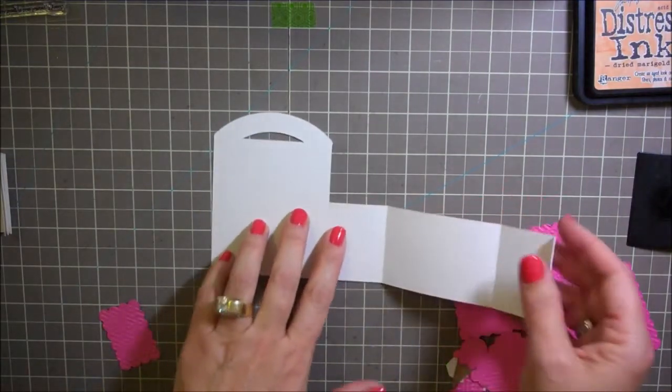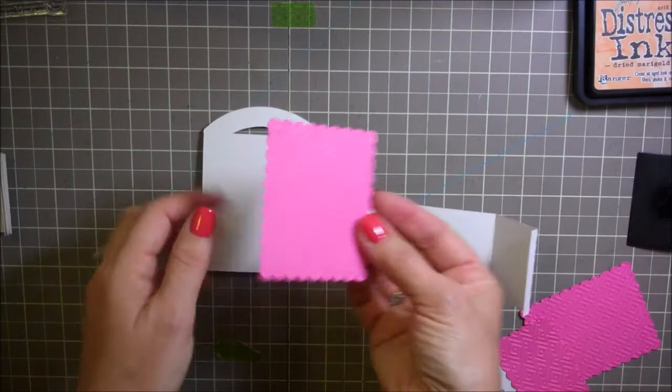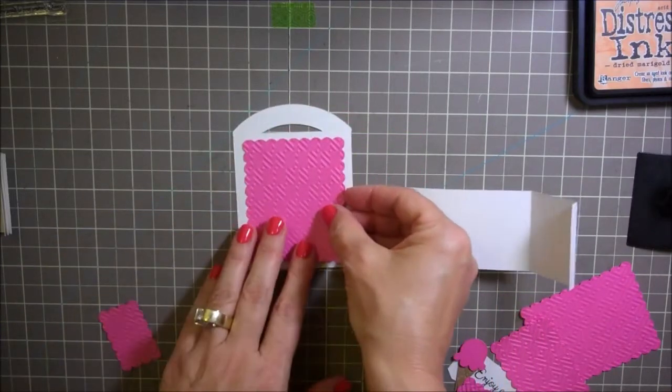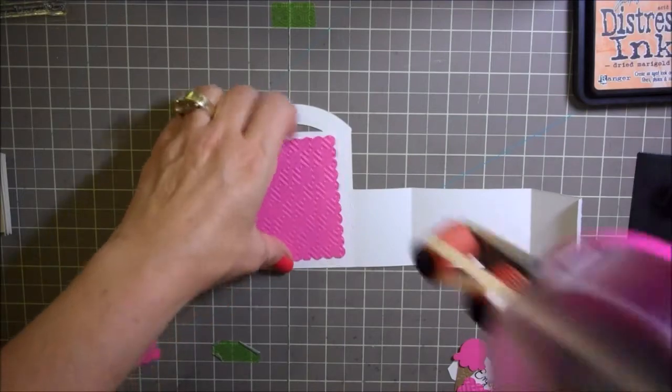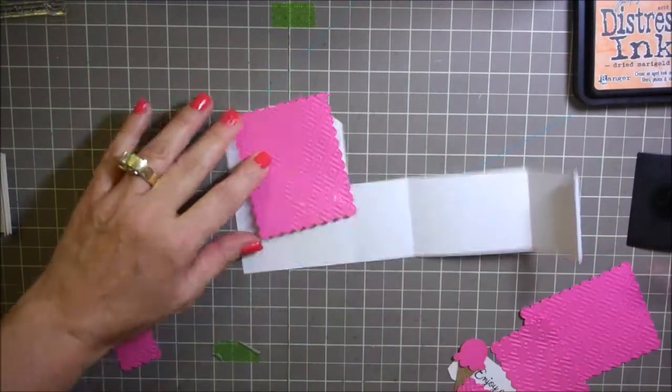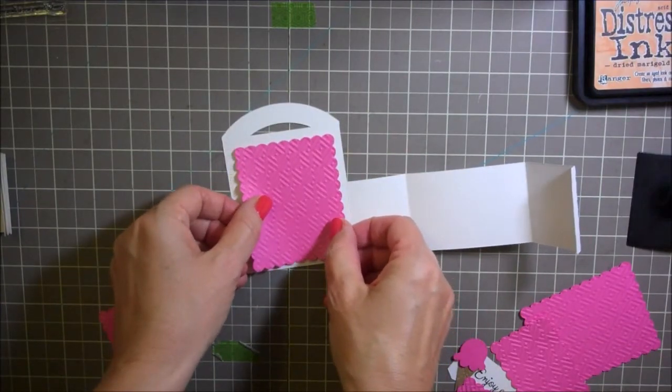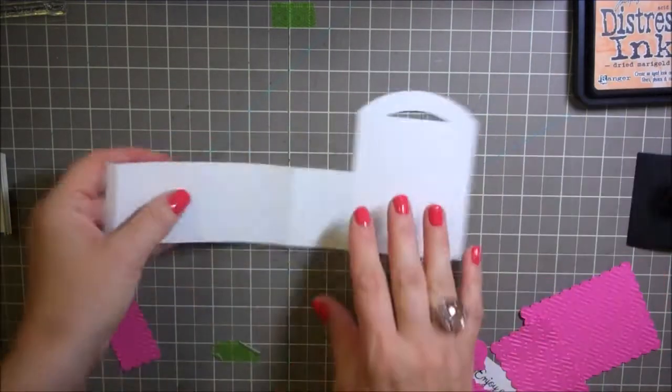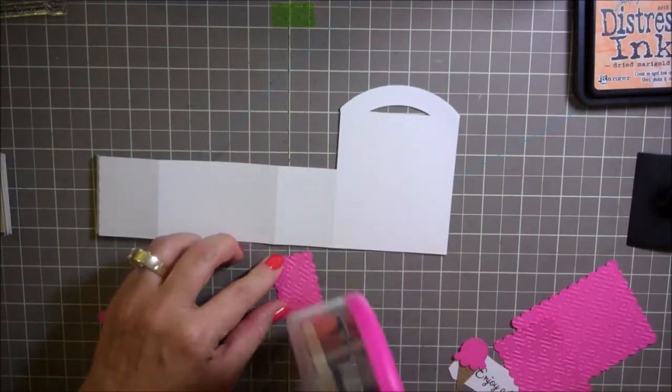So let's get started. The first thing we're going to do is add the layers that go onto this. I did run this through my cuddle bug, so I'm just going to add the layers on here with some of my ATG tape. I'll just add a few of those here, we'll put that right here.